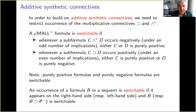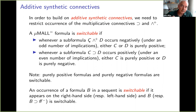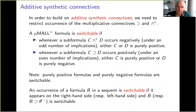What do I mean by additive synthetic connectives? We need to restrict the occurrences of the multiplicative connectives. Whenever there is a multiplicative connective, one side of this connective has to be purely positive — it's like a guard, a computational guard on the rest of the formula. It's not truly multiplicative, because one side will essentially be like a unit — you only know it's a unit by doing a long computation, but it becomes like a unit and the multiplicative connective sort of disappears. Note that if I have a purely positive or purely negative formula, these are examples of switchable formulas.